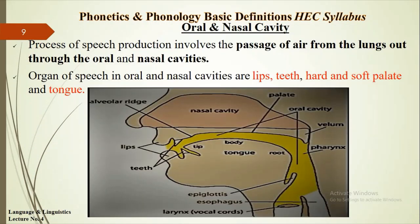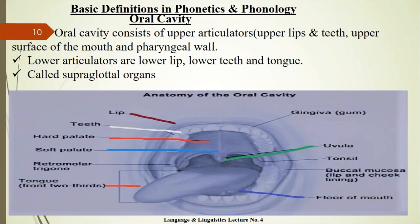The nasal cavity involves a combination of different articulators used for the production of human vocal sounds. The organs of speech in the oral and nasal cavities are lips, teeth, tongue, and soft and hard palate. The cavity consists of upper articulators like upper lips, upper teeth, the upper surface of the mouth and the pharyngeal wall. Lower articulators are lower lips, lower teeth and tongue. These are called supraglottal organs.